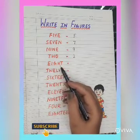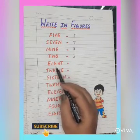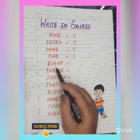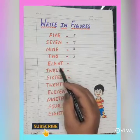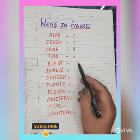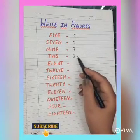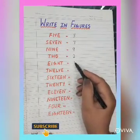Now let's find out the next number. E, I, G, H, T — 8. So we will write here 8.